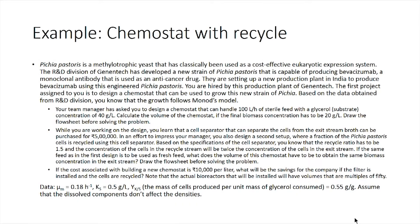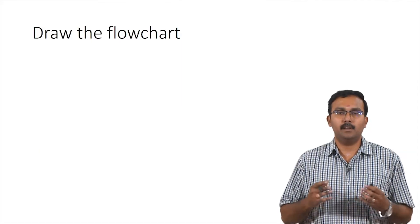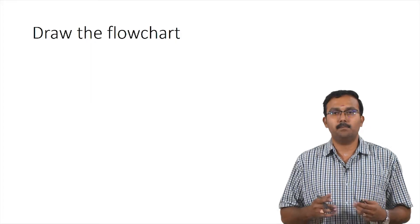You can assume that the dissolved components do not affect the densities. Now that all the information is available in the problem, let us first start with drawing the flow sheet. For the first system it is quite simple — you have a single standalone chemostat with a sterile feed and one exit which would contain the biomass and unutilized substrate. For the second setup you would have a reactor and a cell separator with a recycle stream. Let us see how these flow sheets would look and label all the streams so that we can perform these calculations.